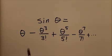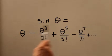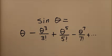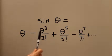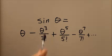Here we're dealing with the infinite series expansion of the sine function. If we express theta in radians, then the sine of theta equals theta minus theta cubed over three factorial plus theta to the fifth over five factorial minus theta to the seventh over seven factorial, and it goes on forever alternating signs.